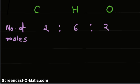Empirical formula is nothing but ratio of number of moles. The ratio of number of moles of carbon to hydrogen to oxygen is given, which is 2 to 6 to 2.